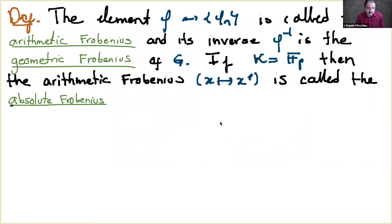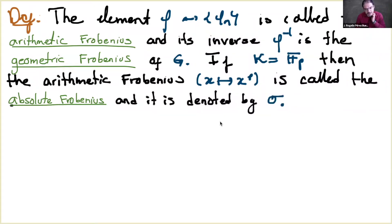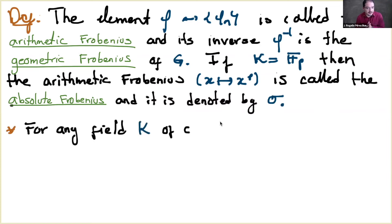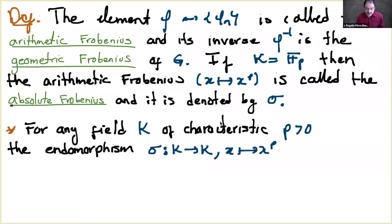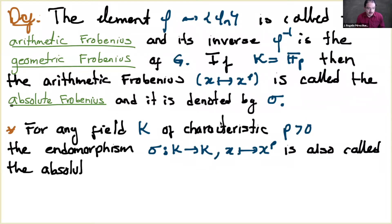The absolute Frobenius is often denoted just by σ. If I have any field of characteristic p, we can also consider this endomorphism from K to K sending x to x^p — this is also called the absolute Frobenius, taking p equal to the characteristic.